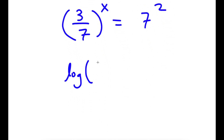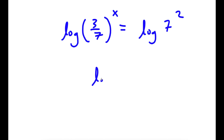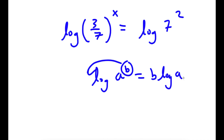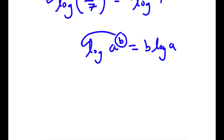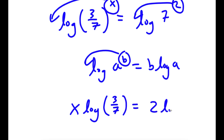Now I'm going to take the log on both sides. So I have log of 3 over 7 to the power of x is equal to log of 7 squared. If I have something in the form log a to the power of b, I can move the exponent b to the front — this is b times log a. So x moves to the front on the left, and 2 moves to the front on the right, giving x times log(3/7) is equal to 2 times log 7.